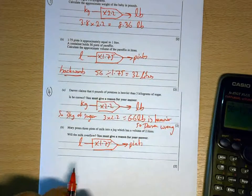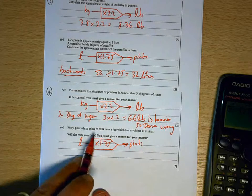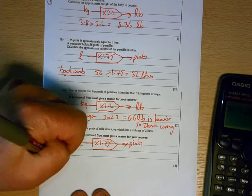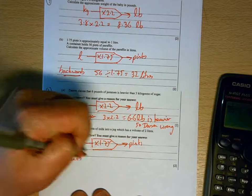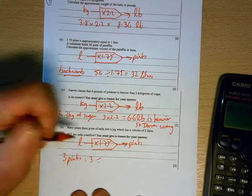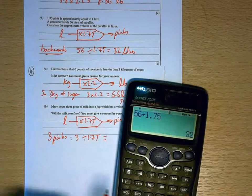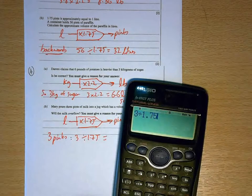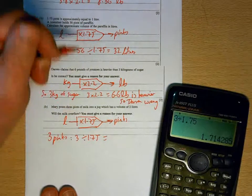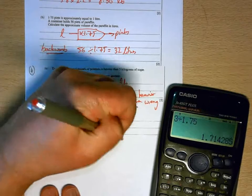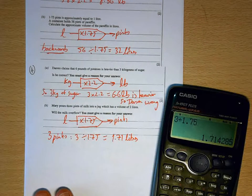So three pints, well in order to turn the pints into liters we need to go backwards through here. So three pints, turn that into liters will be 3 divided by 1.75, which is 1.71 liters, which is less than two liters, so the jug won't overflow.